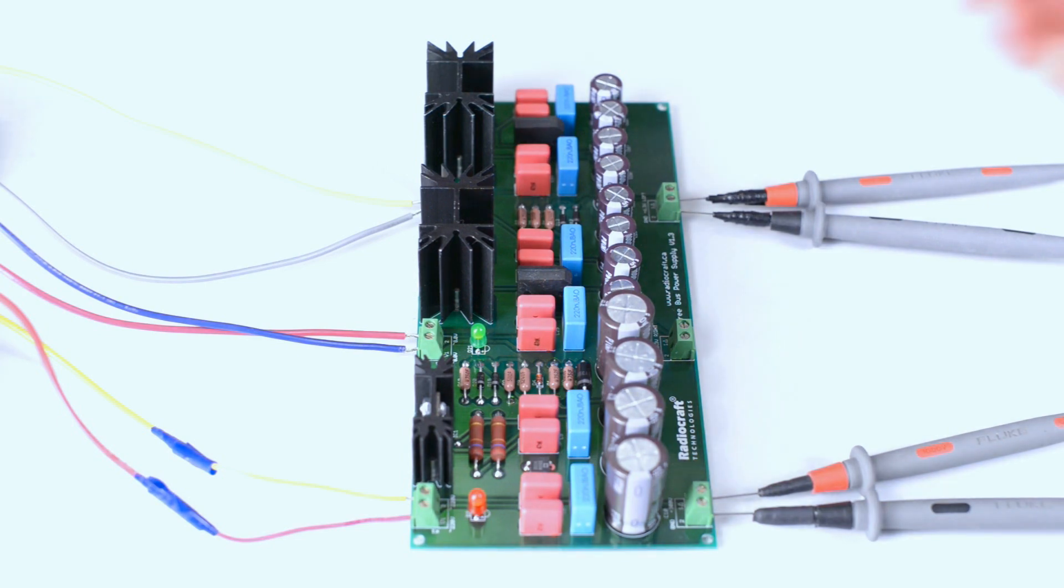In each of the three buses of the power supply we are using stabilizing devices. Those three heat sinks are accommodating stabilizing devices we are employing in this power supply. In the filament buses we are using low drop voltage regulators LM1084V, and in the B-plus bus we are using MOSFET transistor IRF840.